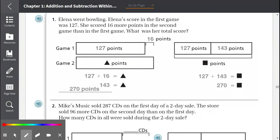Number one. Elena went bowling. Elena's score in the first game was 127. She scored 16 more points in the second game than in the first game. What was her total score? So let's circle our important numbers and keywords. We know she scored 127 points in the first game, and it's right here in this bar model.